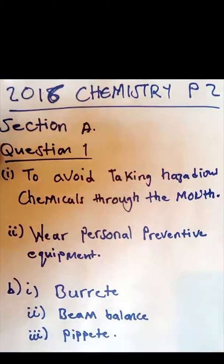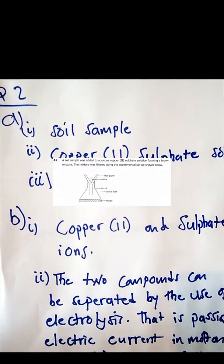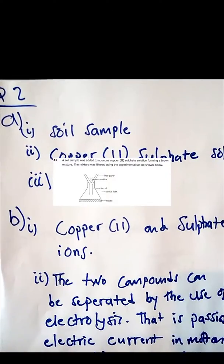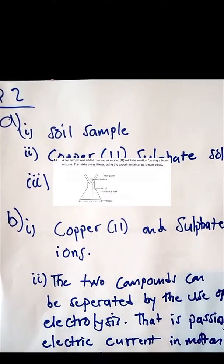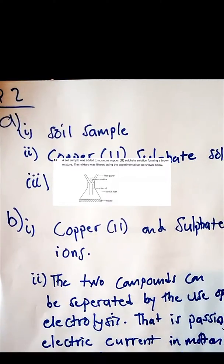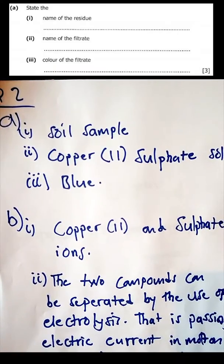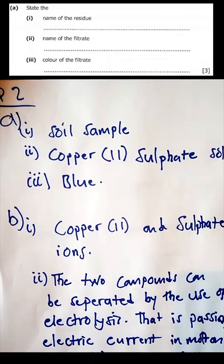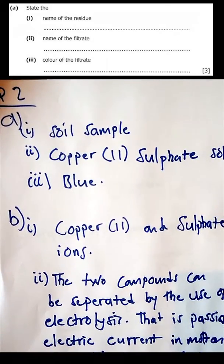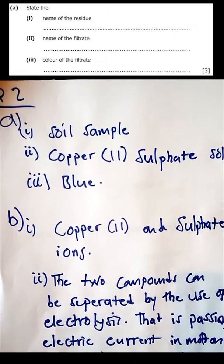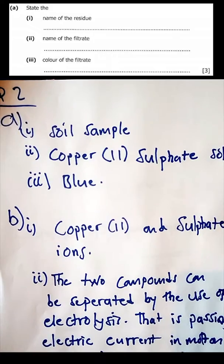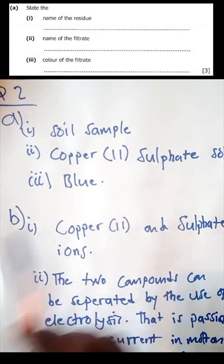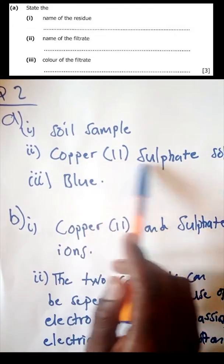Question number two reads: a soil sample was added to aqueous copper sulfate solution forming a brown mixture. The mixture was filtered using the experimental setup shown below. State the name of the residue - the residue which will remain is the soil sample. Name the filtrate - the filtrate is actually the solution which is copper sulfate. Color of the filtrate - copper sulfate's color is actually blue.